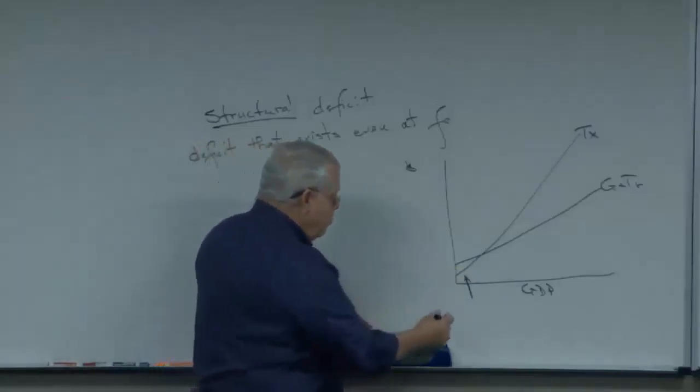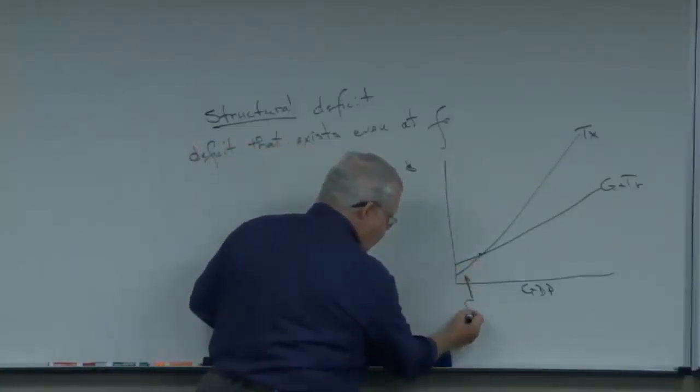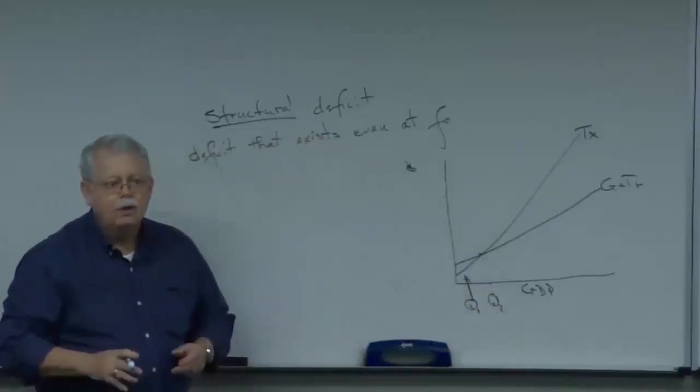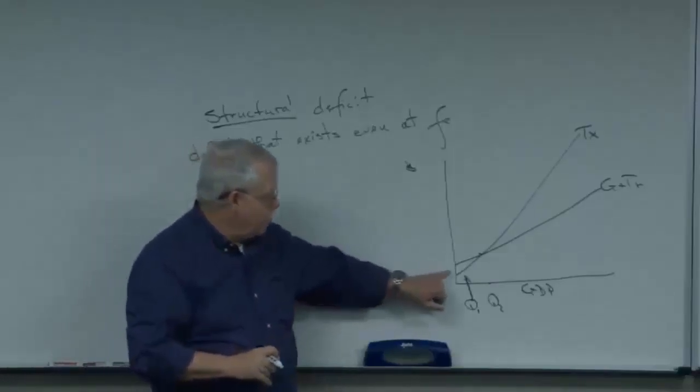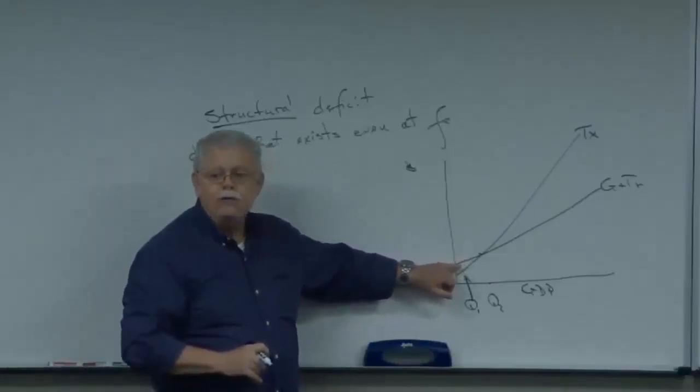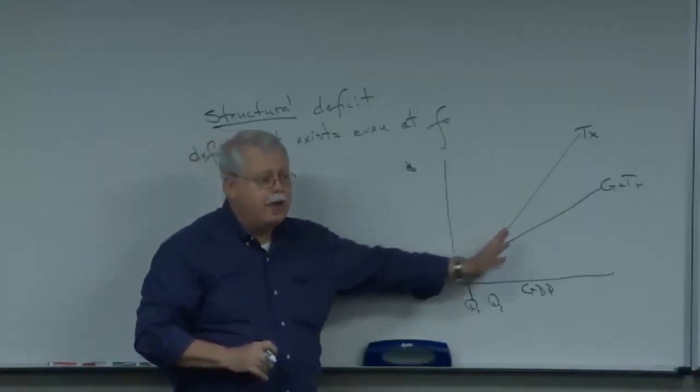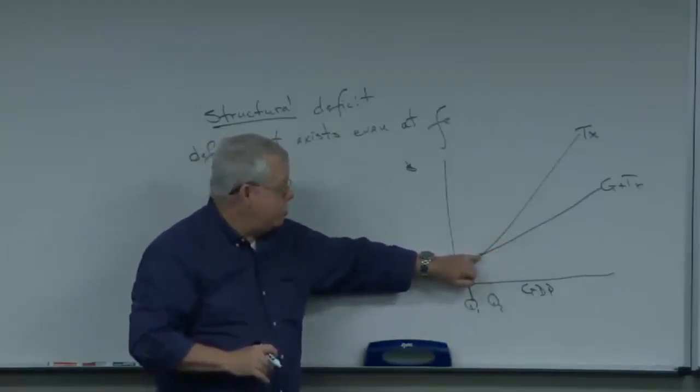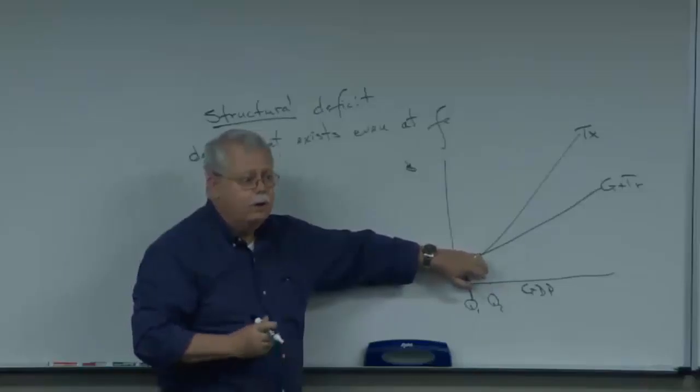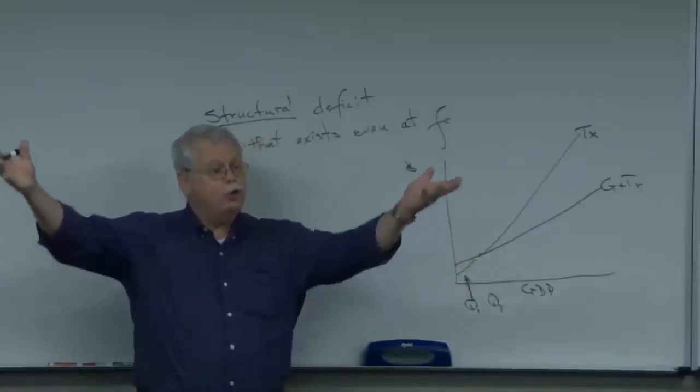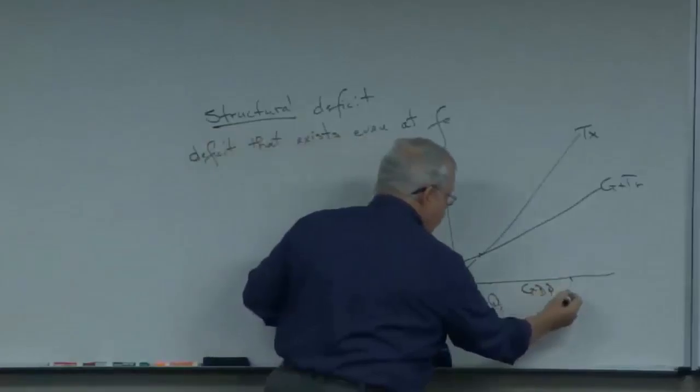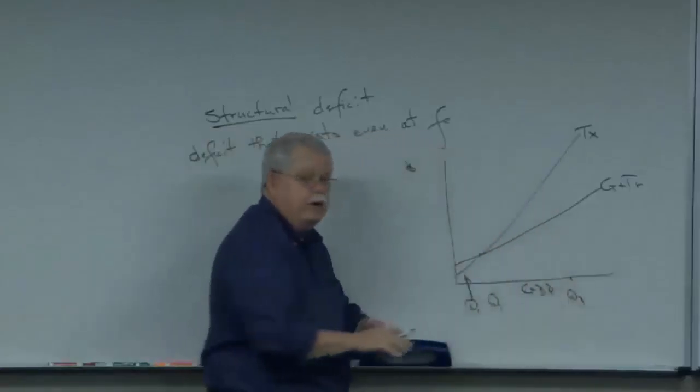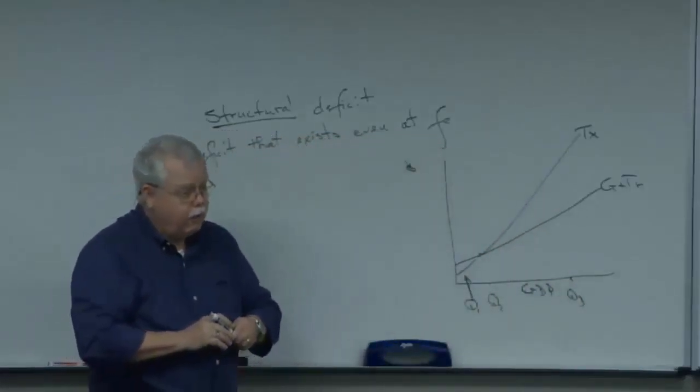But if the economy grows to here, if the economy grows from GDP one to GDP two, what happens? What's growing faster as you expand? Taxes. And so your taxes would grow faster. And eventually what happens right at this point? Balance the budget. You balance the budget because you grew the economy. And if the economy keeps growing on out here to Q3, then you keep running a surplus.